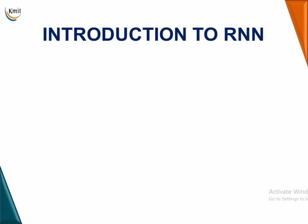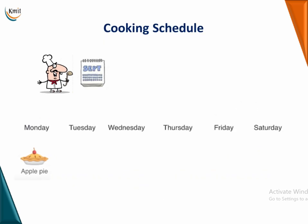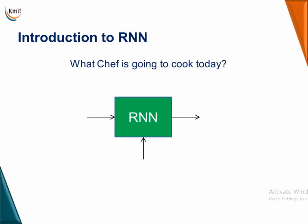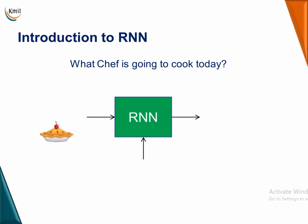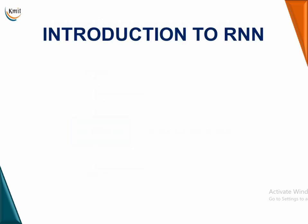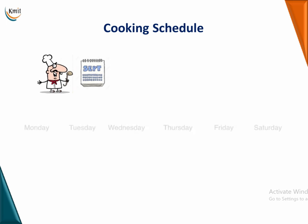Let us see RNN with a quick example — predicting what a chef is going to cook today. There are three options: apple pie, burger, and chicken. We define a cooking schedule from Monday to Saturday. The sequence is: after apple pie comes burger, and after burger comes chicken. Based on what was cooked yesterday, we can predict today's meal. If yesterday it was apple pie, then today it is going to be a burger.